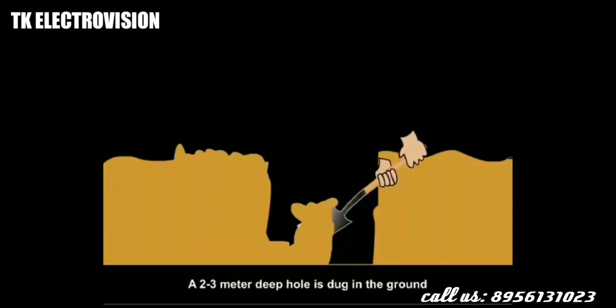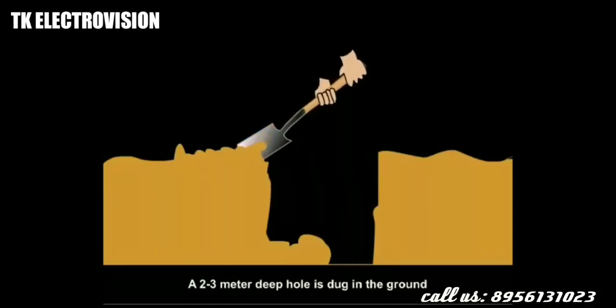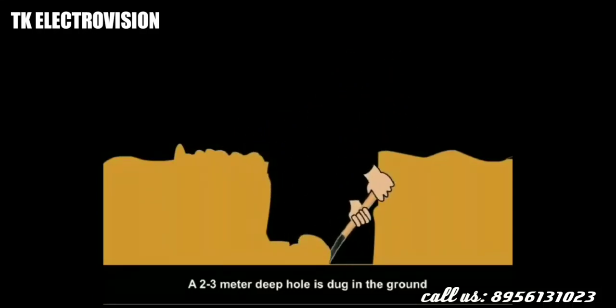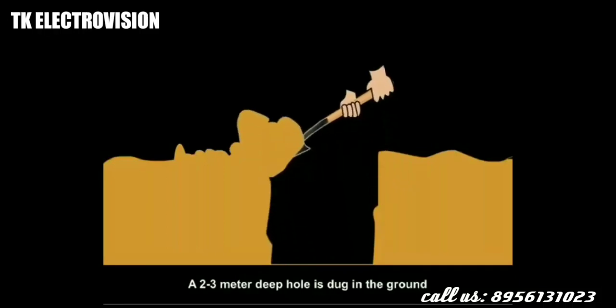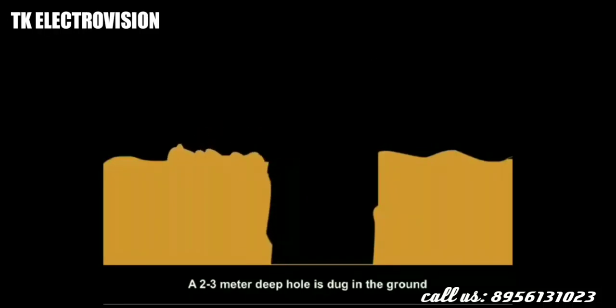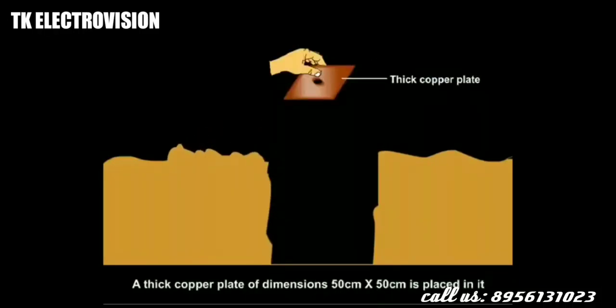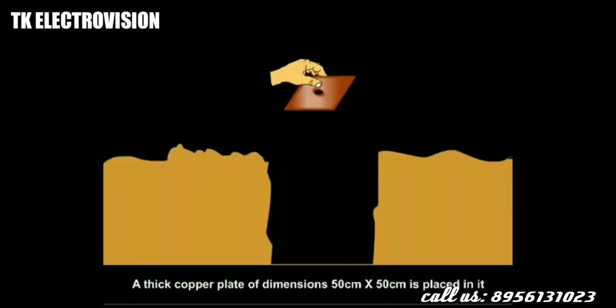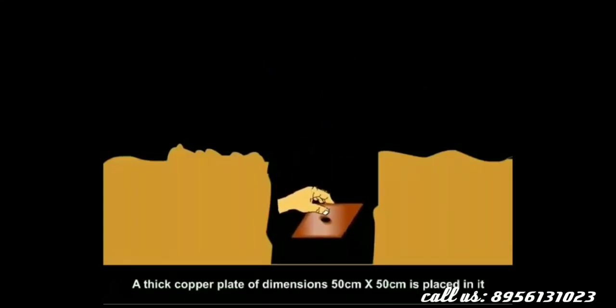To make earthing, a 2 to 3 meter hole is dug in the ground near the house. A thick copper plate, roughly half meter by half meter, is placed in the hole.